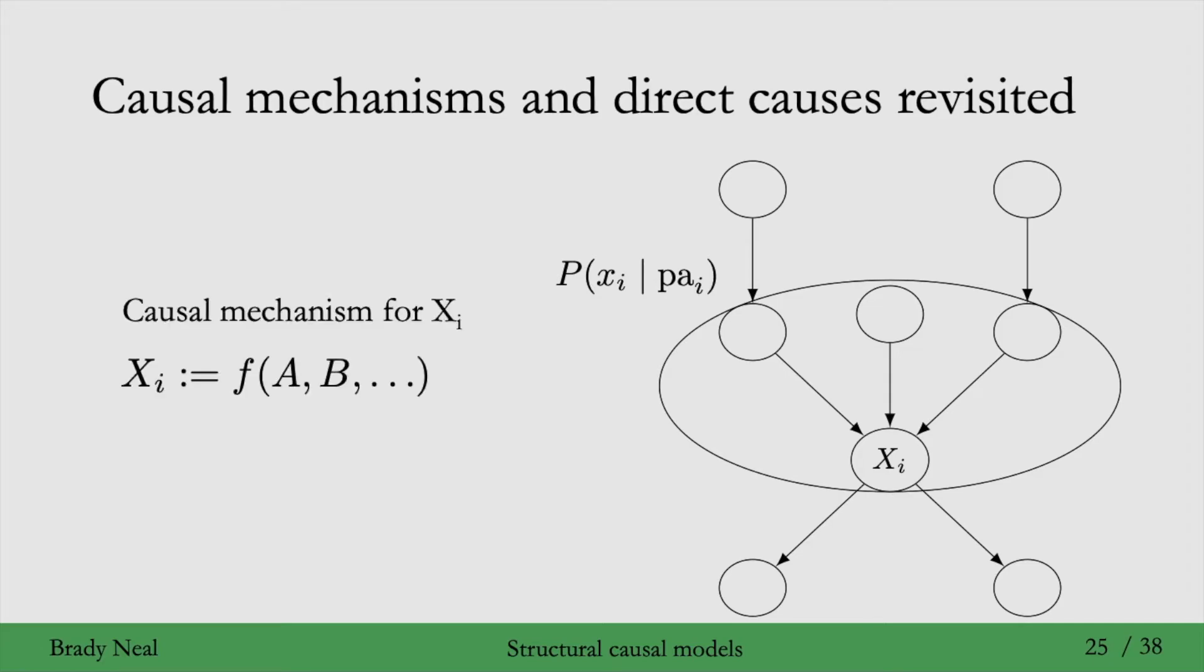With structural equations, we can formulate the causal mechanism that generates xi as just this. So the variables on the right-hand side of this structural equation are the causes of xi, they're like the parents in this graph, and these are called direct causes of xi, because they are directly used to generate xi.